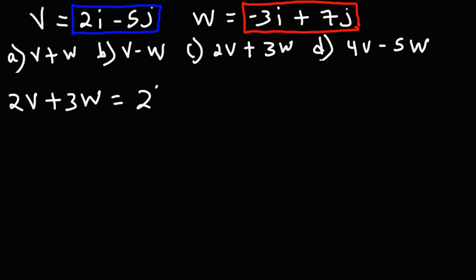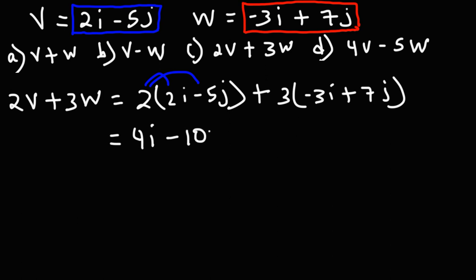So we have 2 times (2i minus 5j), and then plus 3 times (negative 3i plus 7j). Let's begin by distributing. 2 times 2i is 4i, and 2 times negative 5j is negative 10j.